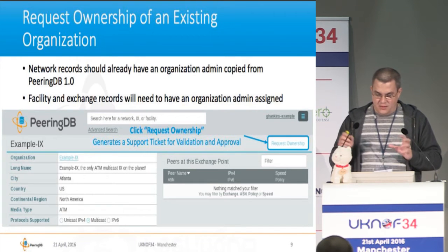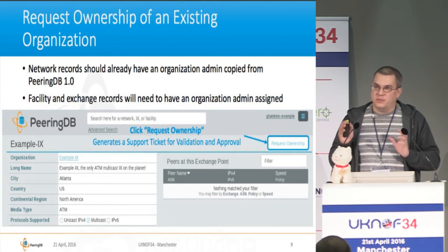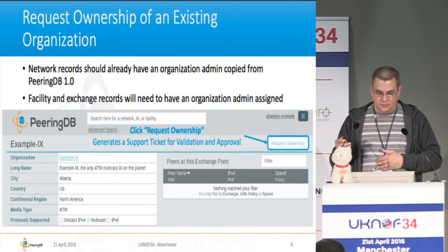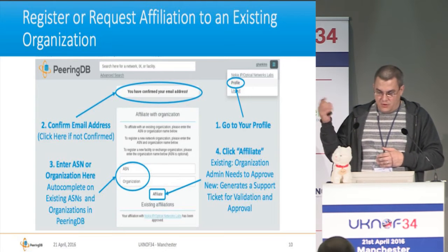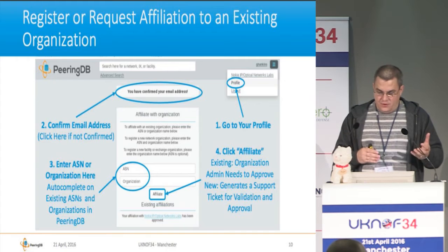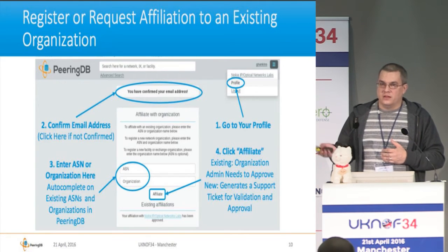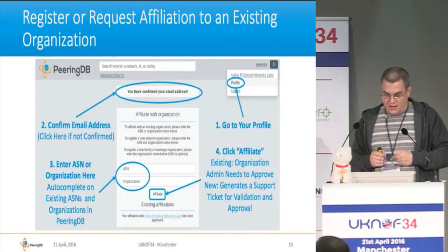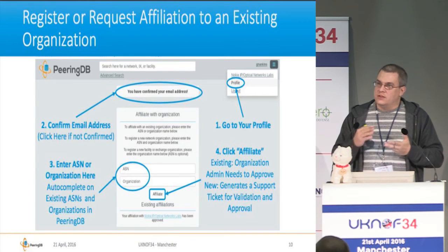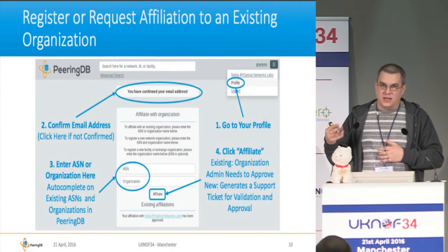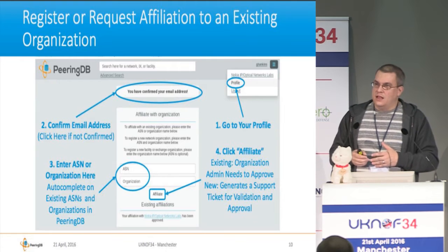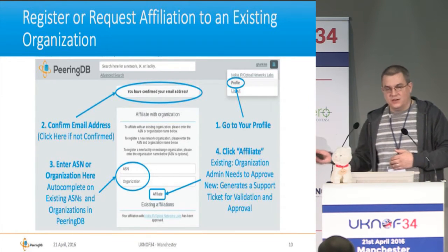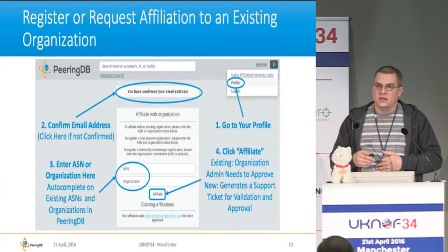To request ownership, find the exchange point — in this example it's a made-up example IX — and click the button that says 'request ownership.' It generates a support ticket where it's validated. To request affiliation with an existing organization, go to your profile under the drop-down menu, confirm your email address, then enter an ASN or organization number. If it's a new ASN it will generate a support ticket; if it's existing, it will autocomplete on the ASN or organization name. Then click affiliate, and it sends the request to the owner to authorize your account.